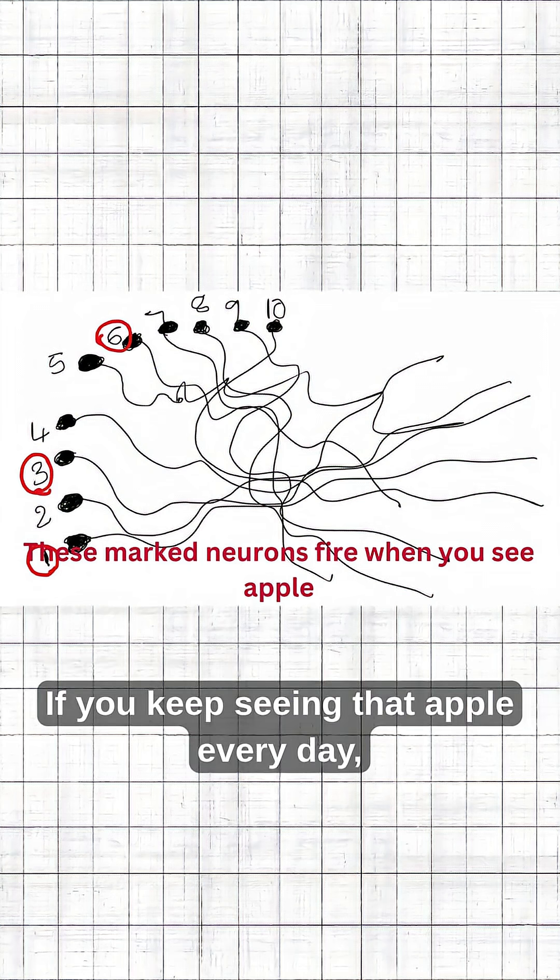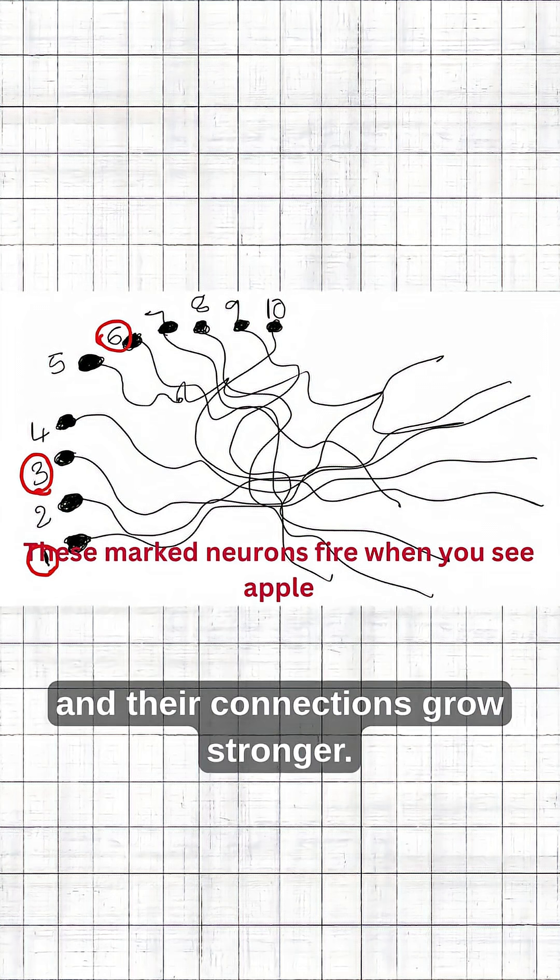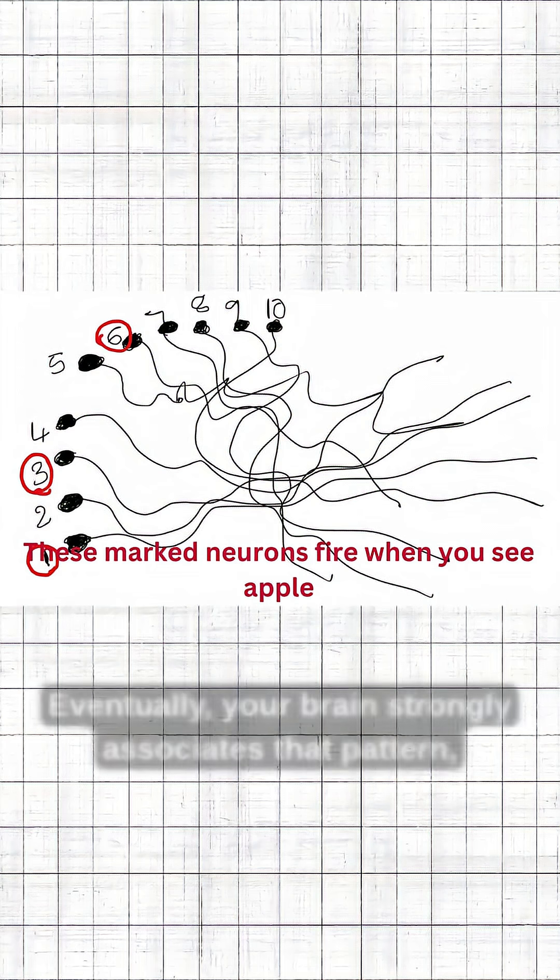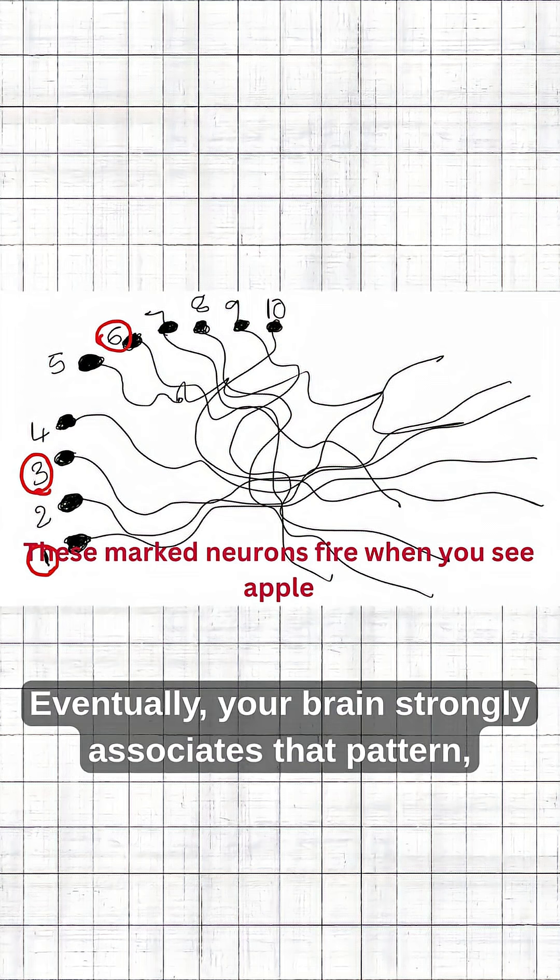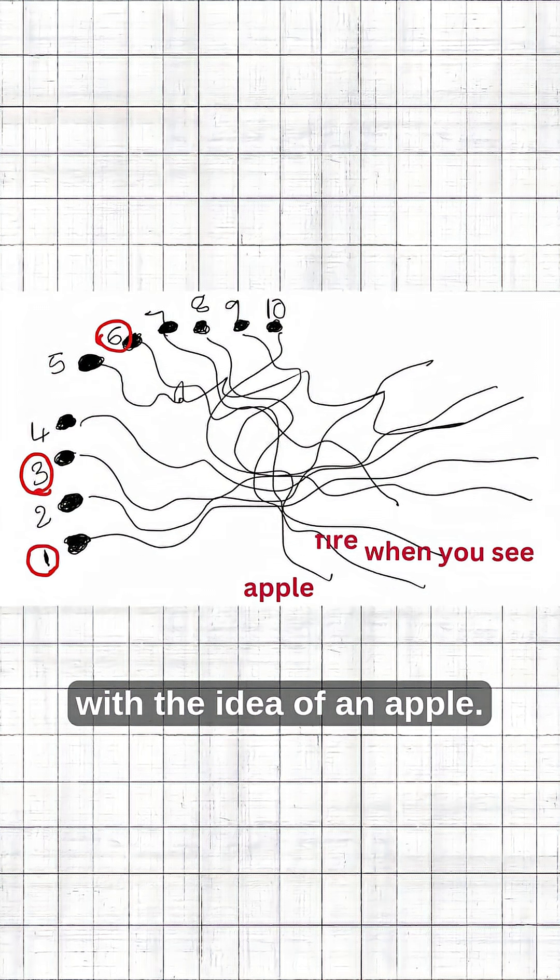If you keep seeing that apple every day, these same neurons keep firing together, and their connections grow stronger. Eventually, your brain strongly associates that pattern, those three neurons firing, with the idea of an apple.